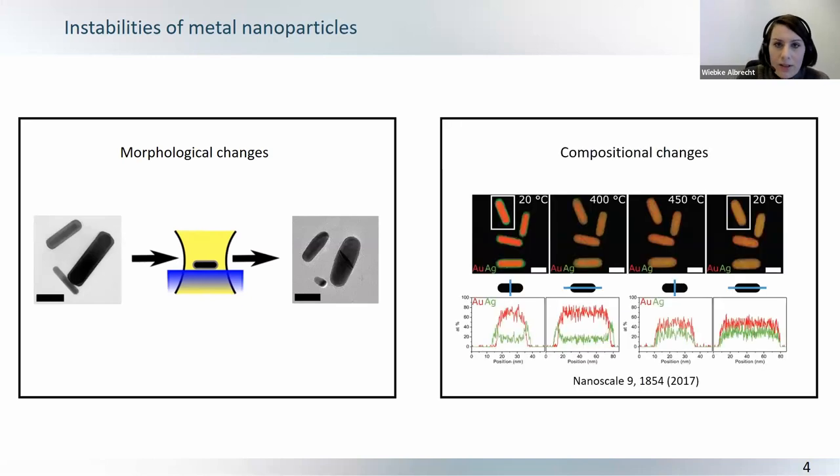On the other hand, you can also see that compositional changes can occur if you have more than one material, such as, for example, here in these gold-silver nanoparticles, which start to alloy upon elevated temperature.